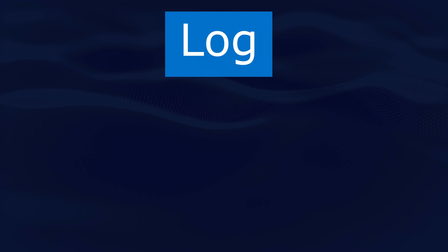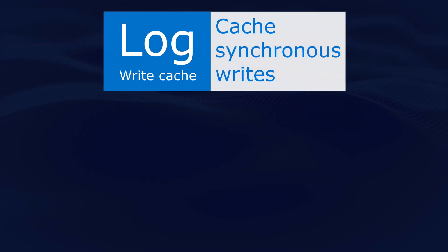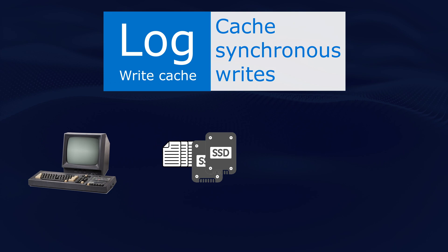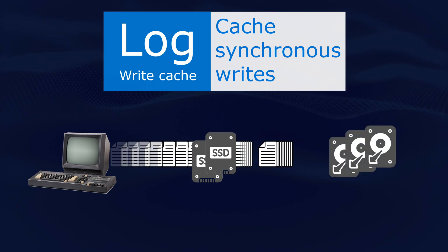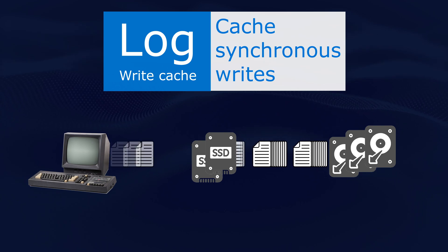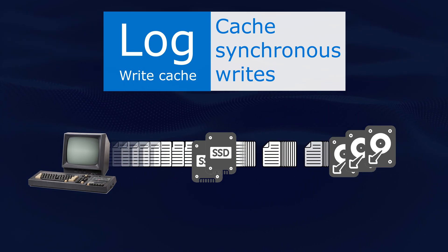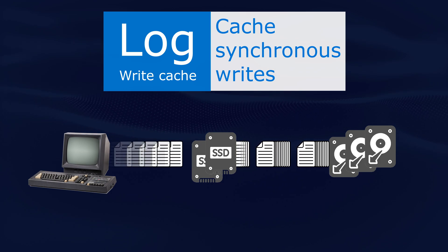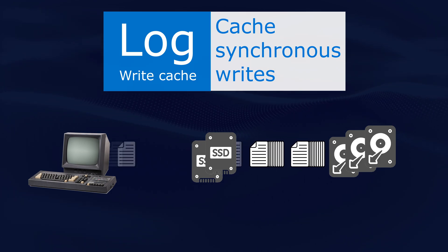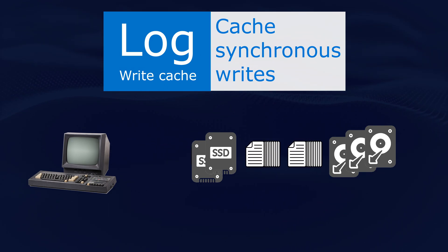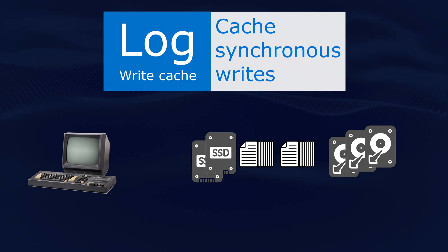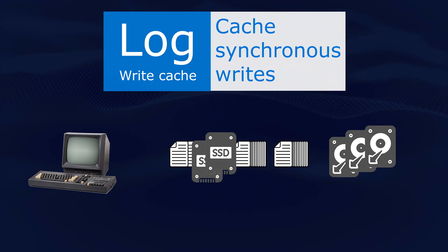Now let's talk about Log VDevs. Log VDevs, also known as a Write Cache, are meant to cache synchronous writes coming into your NAS and commit them back to the slower disks over time. If you have big slow disks in your storage, having a Write Cache would increase the speed at which you can write data by caching those writes and then in the background writing the data back to slower storage. Log VDevs have two different disk layout options. There are more types of VDevs as well, like metadata VDevs and dedupe VDevs, but we're going to focus on the big three.